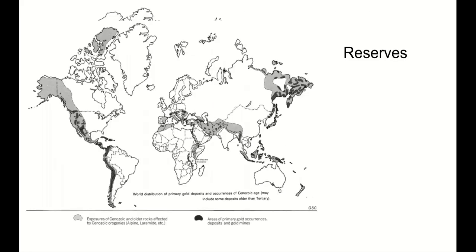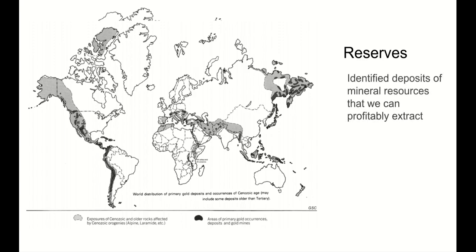One more vocabulary term: reserves. This is a map of all the gold reserves on Earth, showing the worldwide distribution of gold deposits. Reserves are identified deposits of mineral resources that we can profitably extract. Most countries won't show you exactly where their mineral deposits are, so this is an approximate map. You can imagine there's other gold on Earth, but it's not part of reserves because we can't profitably extract it yet — for example, there's a lot of gold in the deep ocean, but we can't get there.